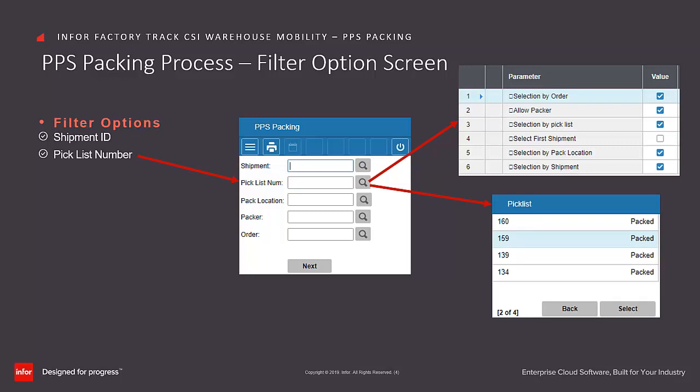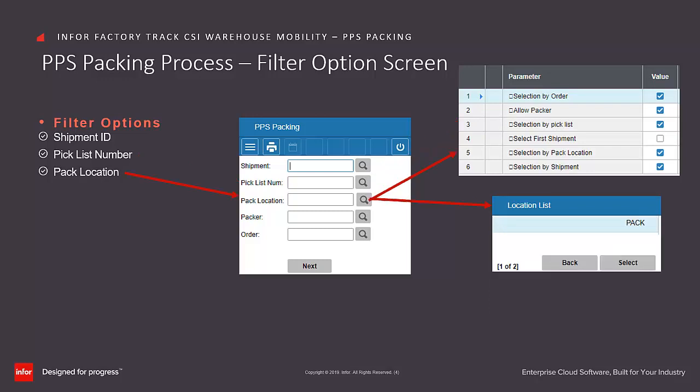You can enter, scan, or search the picklist number. The Pack Location field is made available if the Selection by Pack Location option is selected in the transaction set maintenance form. You can enter, scan, or search the Pack Location ID.